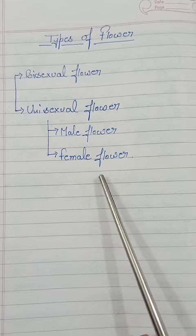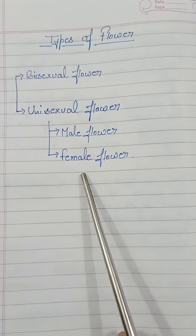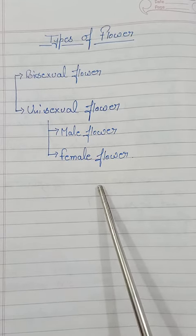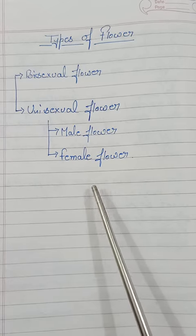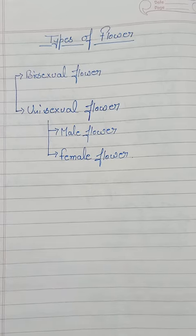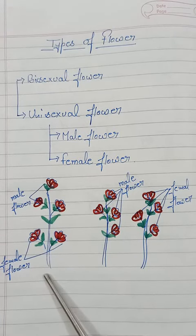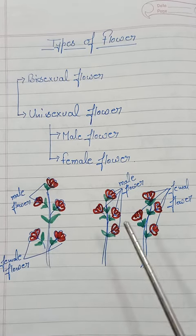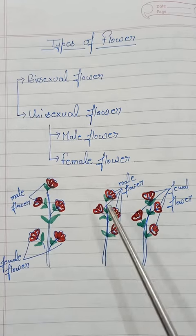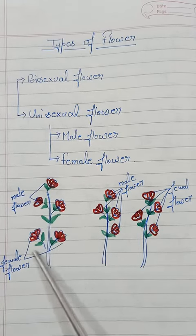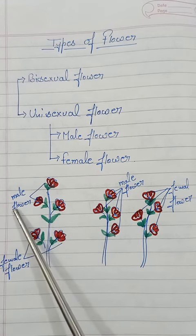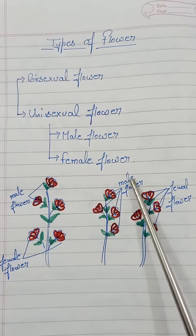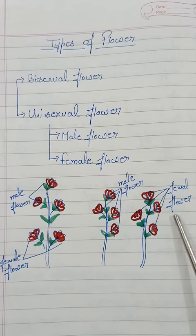Male and female flowers may be present on the same plant or on separate plants. A flower could contain both male and female flowers on the same plant, or they may be borne on different plants. For example, this plant is bearing female flowers at the lower part and male flowers at the upper part, whereas in these two plants, one contains only male flowers and the other contains only female flowers.